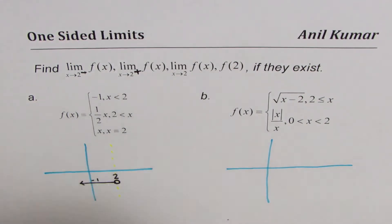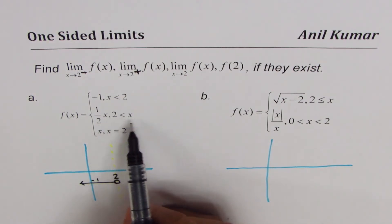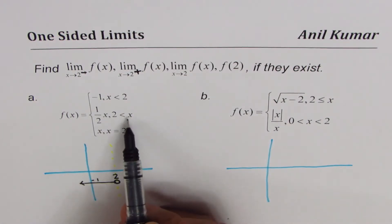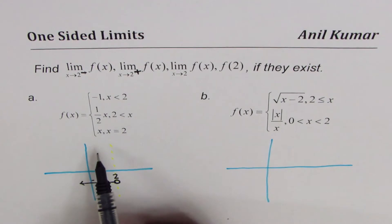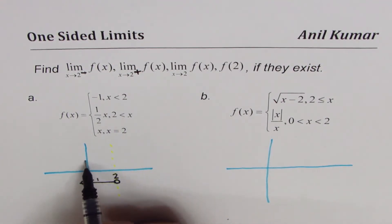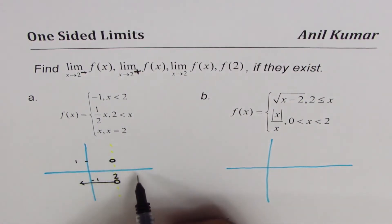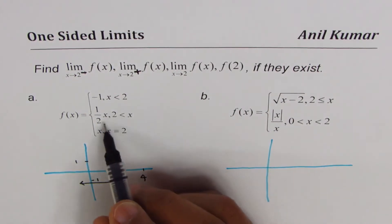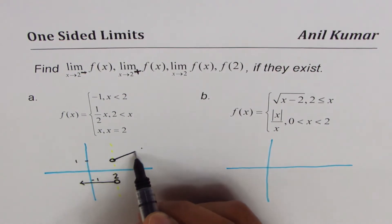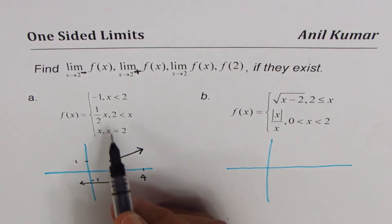The second piece: the value of the function is x/2 when x is greater than 2. If I substitute x = 2, I get a value of 1. At x = 4, the value is 2. So we have an open circle near x = 2 at height 1, and the line goes up through (4, 2). That is the second piece.